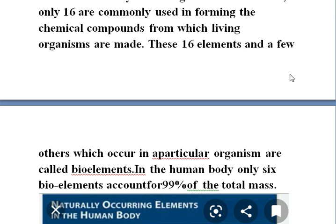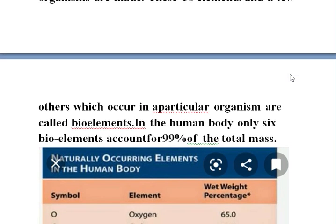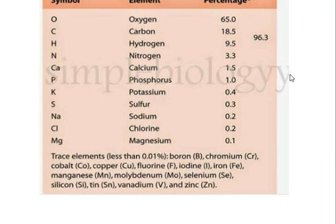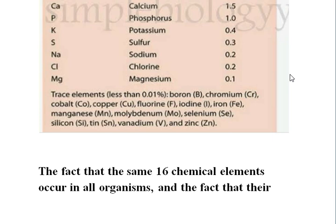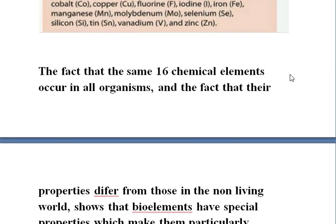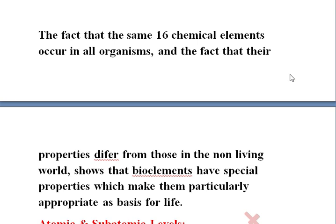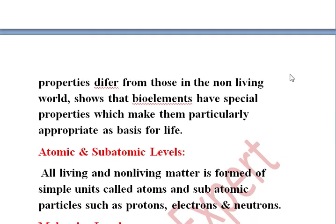Only six bio-elements account for 99% of the body of an organism. The percentages of these bio-elements are given below. The 16 chemical elements occur in all organisms, and these elements have properties different from those in the non-living world. Bio-elements have special properties which make them a particularly appropriate base for life.